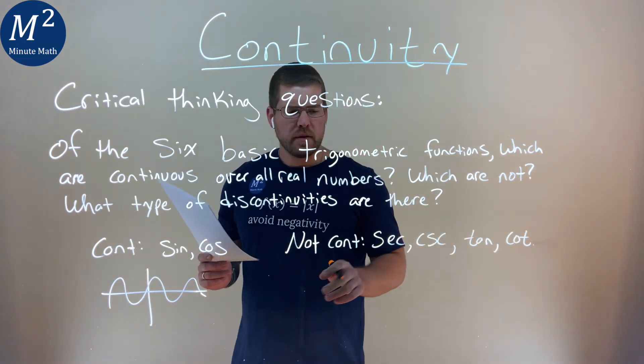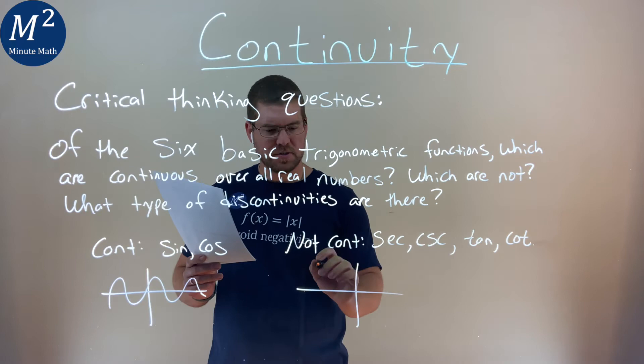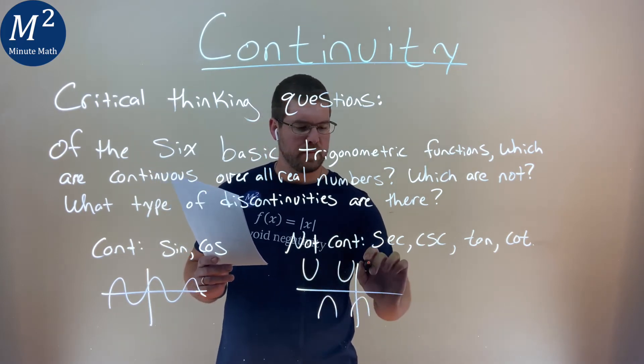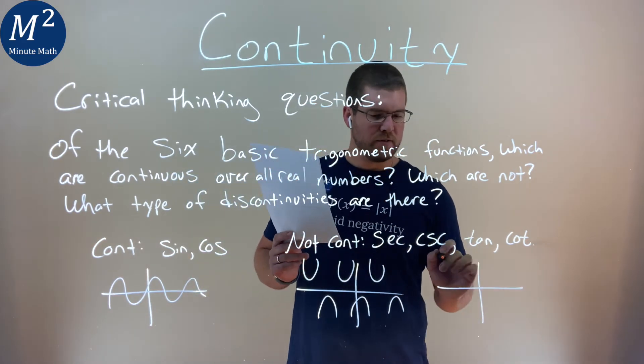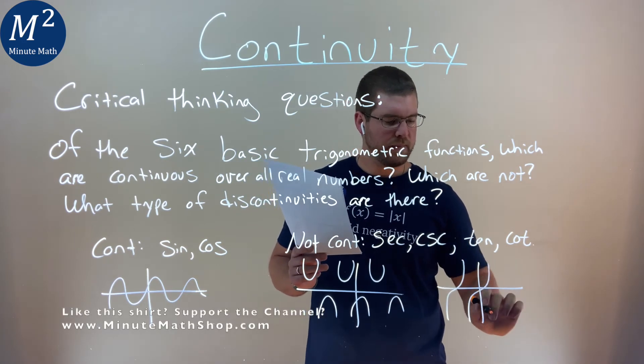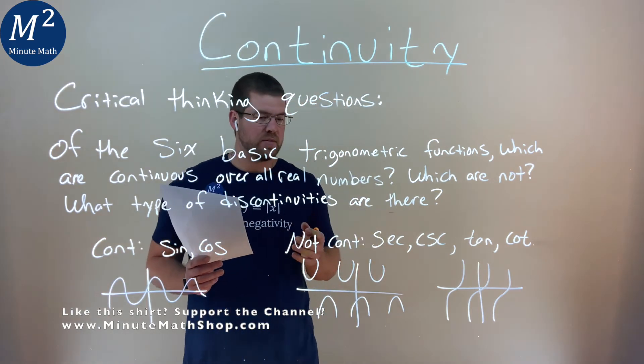The secant and cosecant have basic shapes like such. It has some U things that go on like this. What type of discontinuities are these?